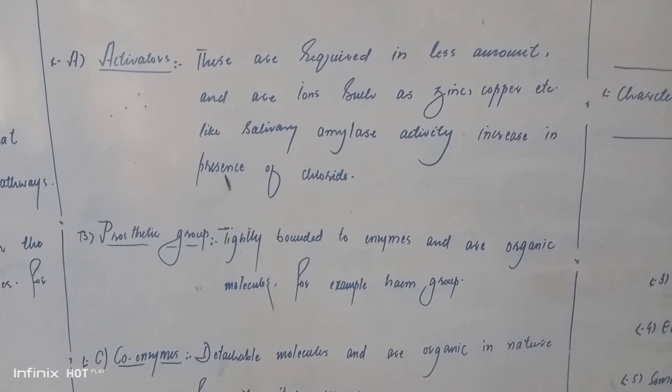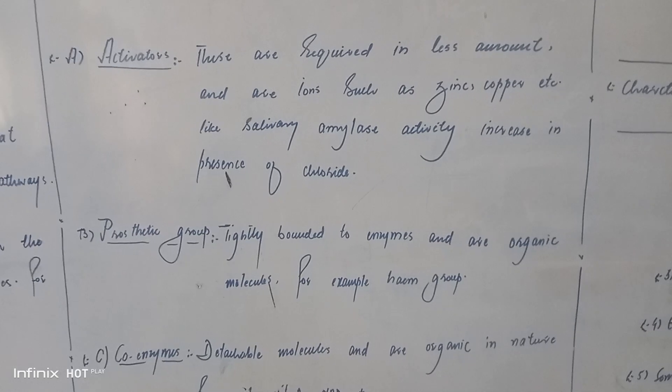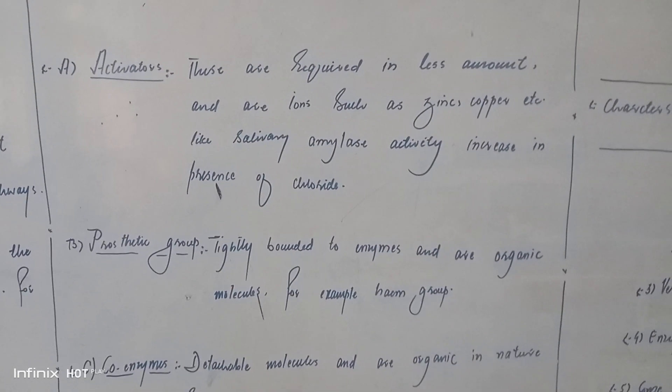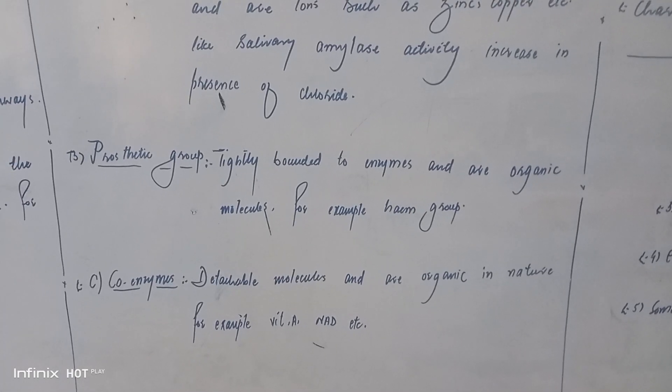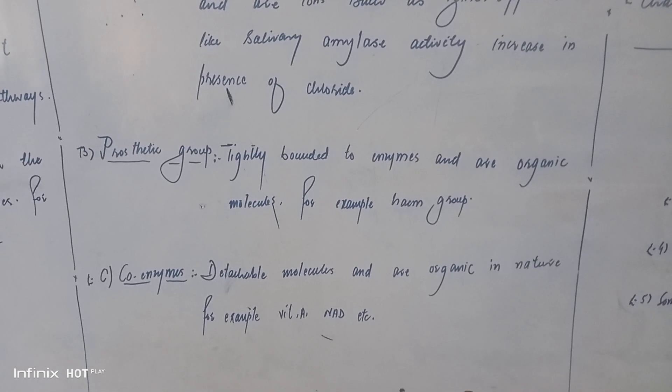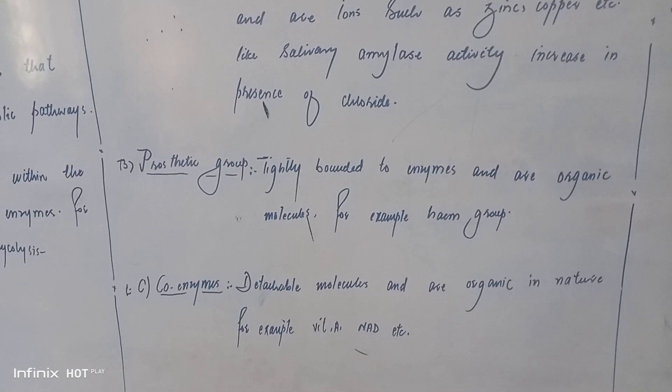Prosthetic groups - tightly bound to enzymes and are organic molecules. For example, heme in blood. Co-enzymes are also organic in nature, for example vitamin derivatives and nicotinamide dinucleotide (NAD).